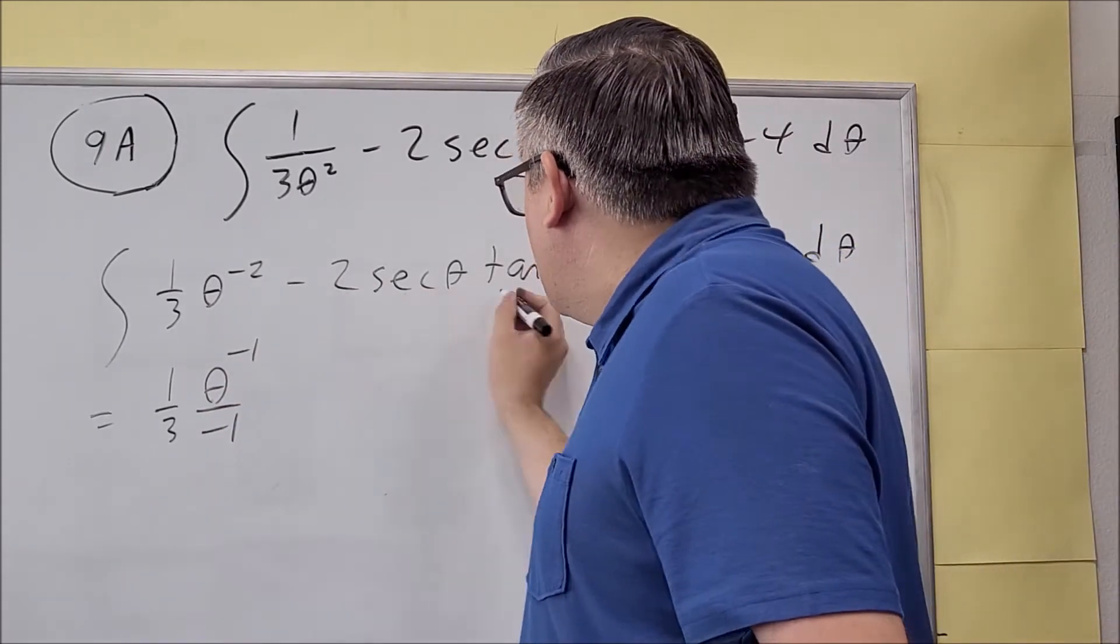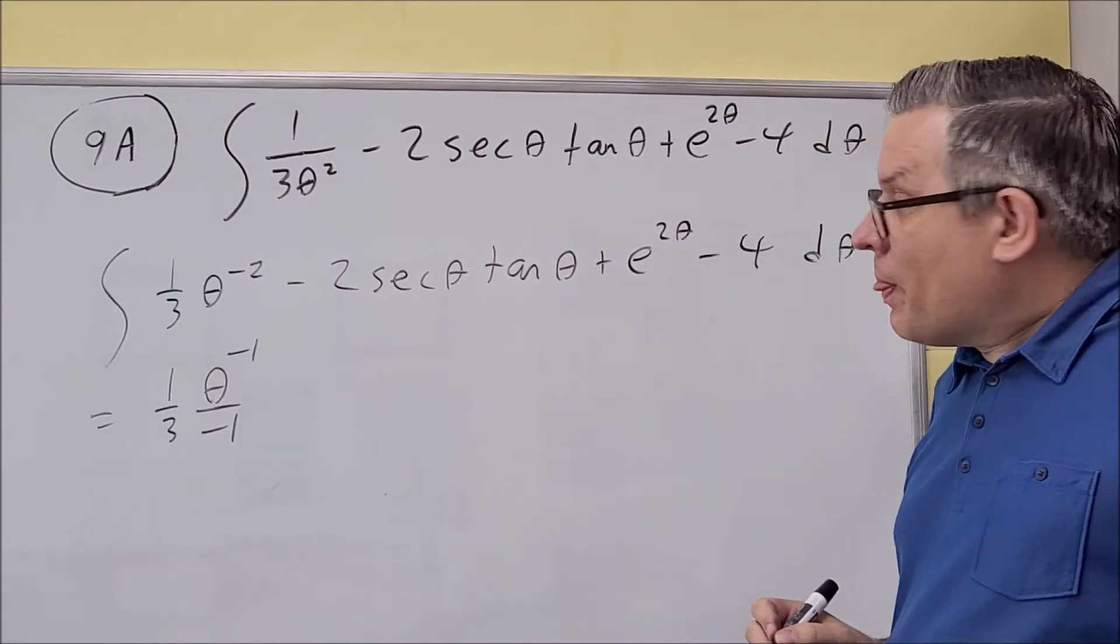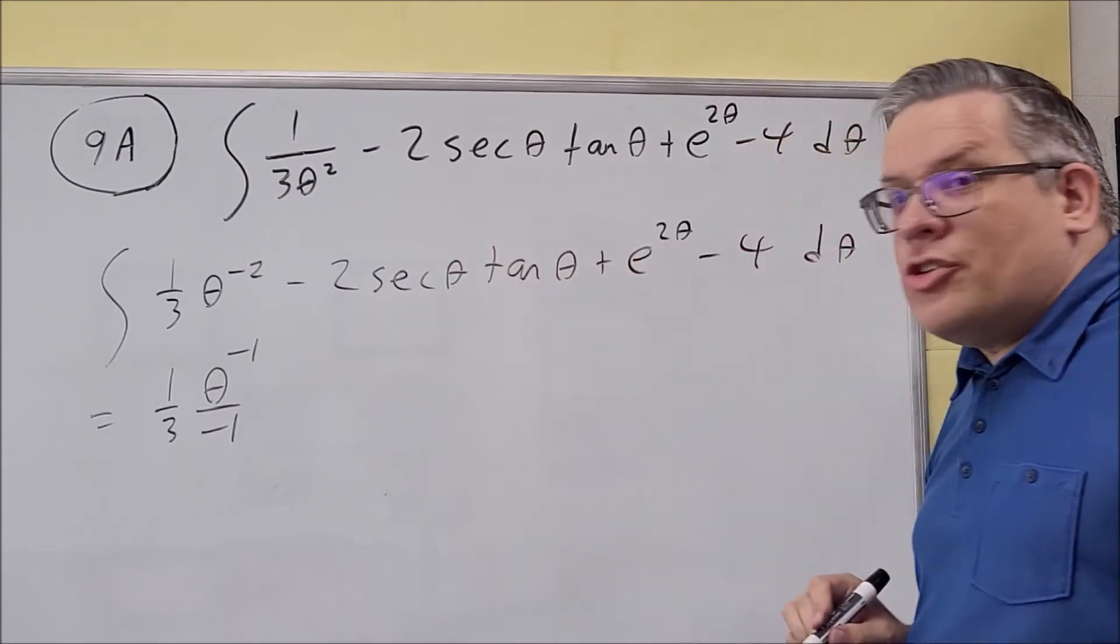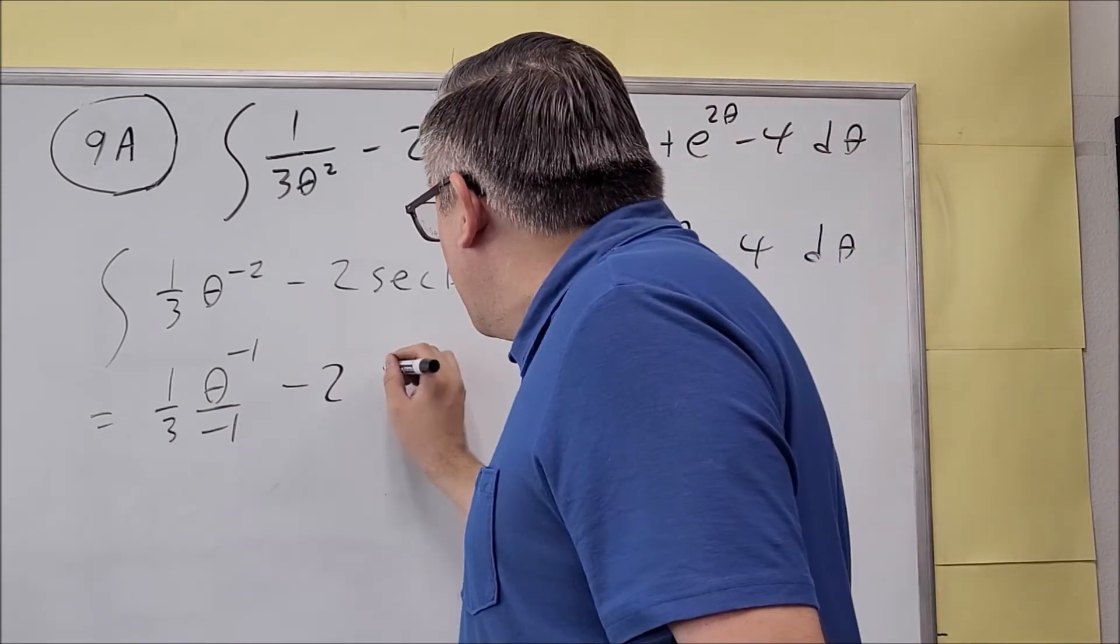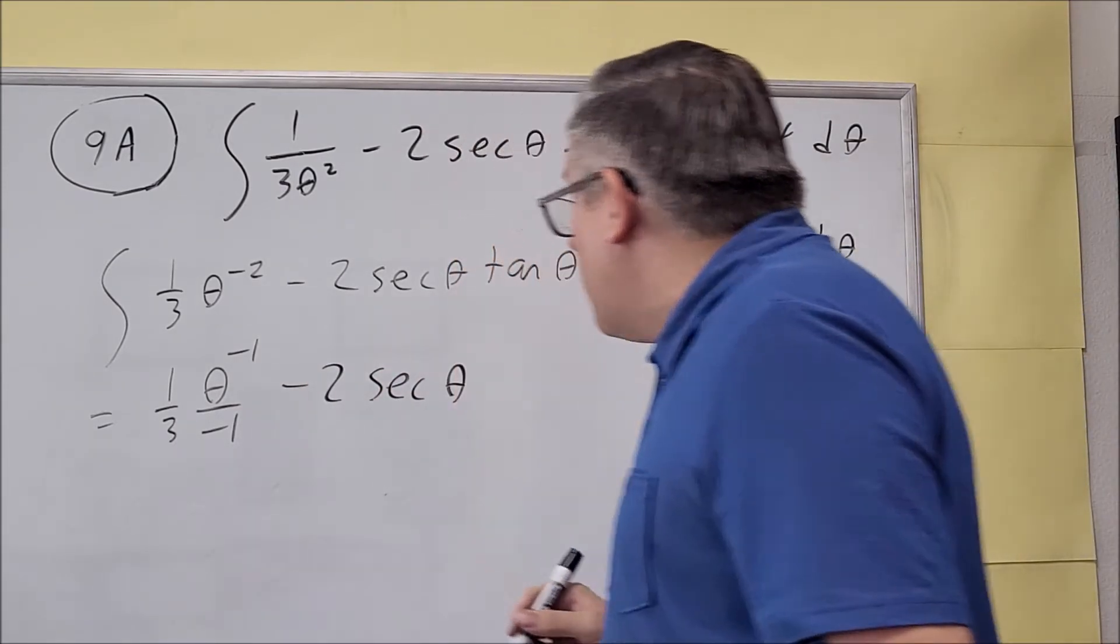Next, we have the secant tangent, so if you integrate secant tangent, you just get secant. The minus 2, you're just going to take that down as is.